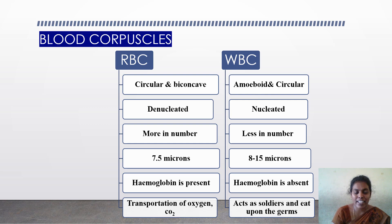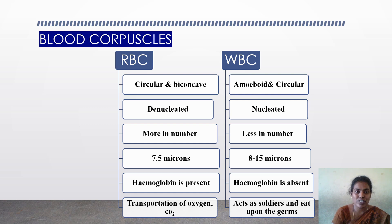The second important component of blood is blood corpuscles. Blood contains two types of cells: RBC (red blood corpuscles) and WBC (white blood corpuscles). If you observe the shape of RBC, the red blood cells are circular in shape and most are biconcave in nature.